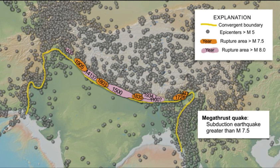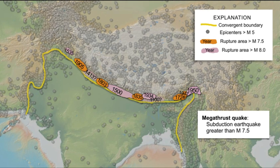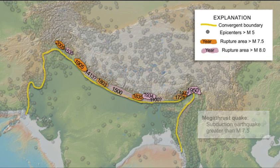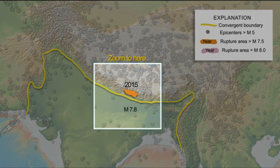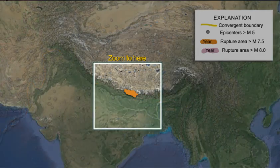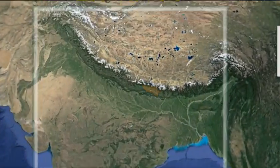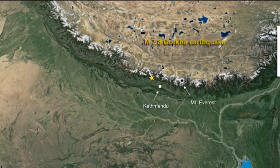The magnitude 8.6 Assam-Tibet event in 1950 was the 10th largest earthquake of the 20th century. On April 25, 2015, the magnitude 7.8 Gorkha earthquake started 15 kilometers beneath the epicenter northwest of the Nepal capital of Kathmandu, and ruptured 100 kilometers toward the east.